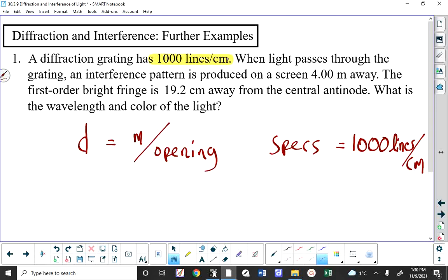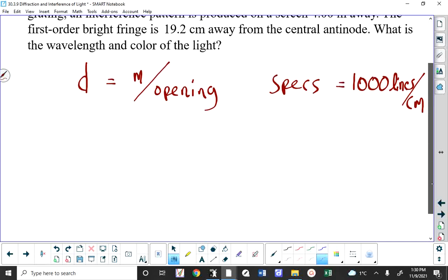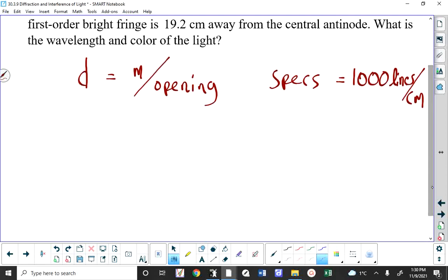So if I know how many lines per centimeter there are, then D can be found by taking the reciprocal of that number. And I'm going to get centimeters per line, which is a measurement of D. I'm going to have to convert it to meters, but I'm still getting centimeters per line.